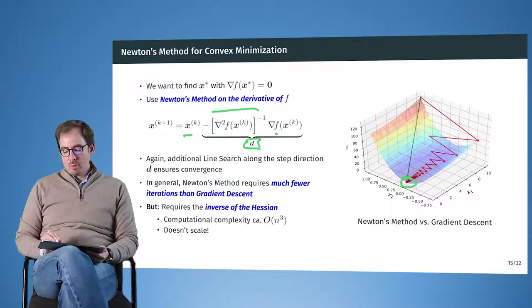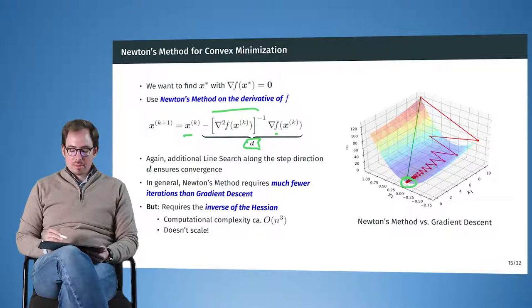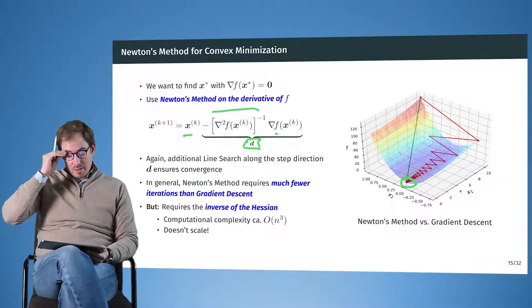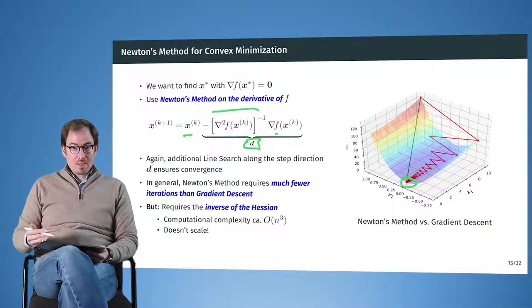And in general, Newton's method requires a lot fewer iterations than gradient descent. So originally we had 130 steps we had to take to get here to close to the minimizer. And with Newton's method it took us exactly one step. And so we are 130 times faster.